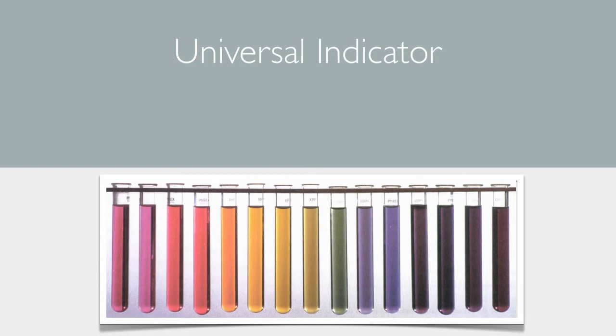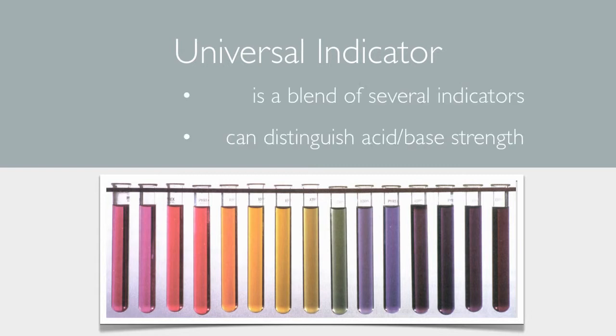Universal indicator is what we get when we mix a whole bunch of different indicators. And this is great because then we can see the strength of an acid or base. In fact, in this picture here, it's all actually the same blend of universal indicator. So each test tube has a different strength, acid, or base environment. The strongest acid being on the far left and the strongest base being on the far right.